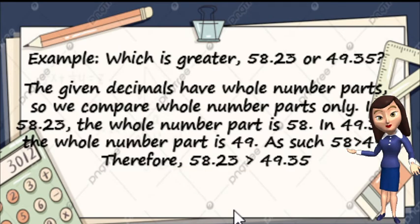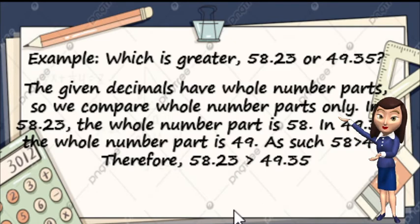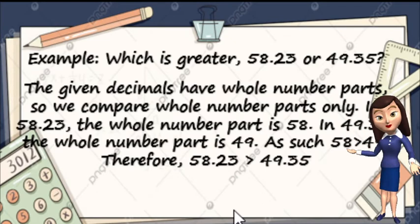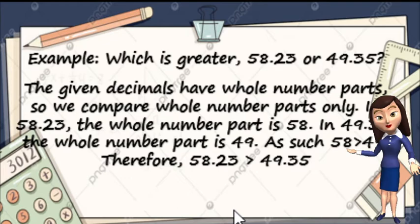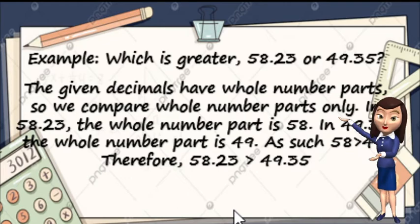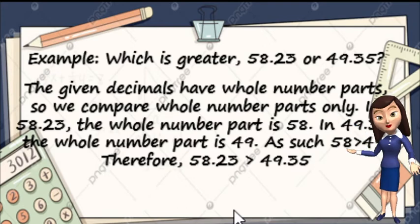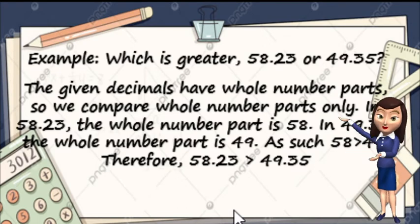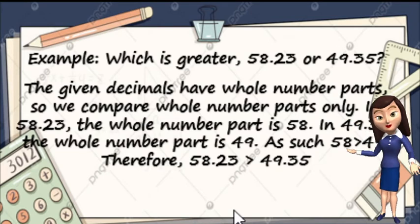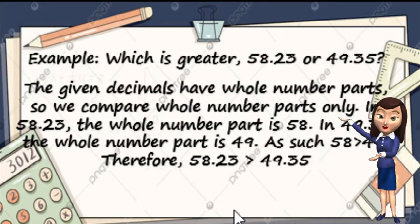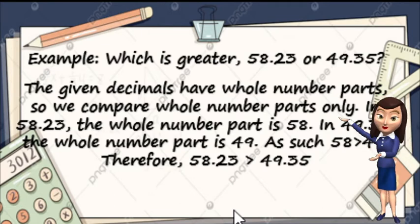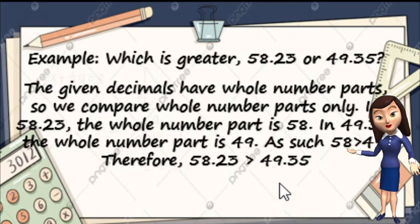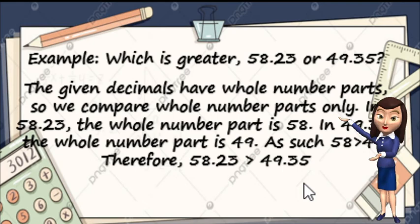Let's have another example. Which is greater: 58 and 23 hundredths or 49 and 35 hundredths? So the given decimals have whole number parts. So we are going to compare the whole number parts only. Dun sa 58 and 23 hundredths, yung whole number part natin is 58. And dun naman sa 49 and 35 hundredths, yung whole number part natin is 49. So pag pinag-compare natin yung 58 and 49, mas malaki yung 58. Therefore, 58 and 23 hundredths is greater than 49 and 35 hundredths.